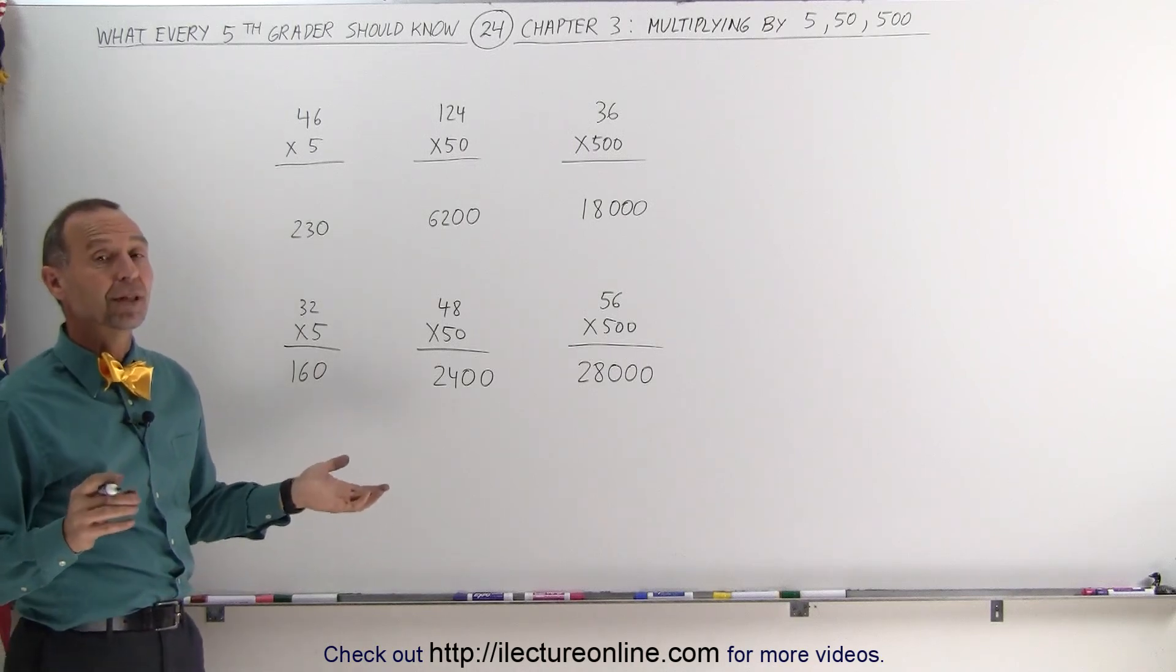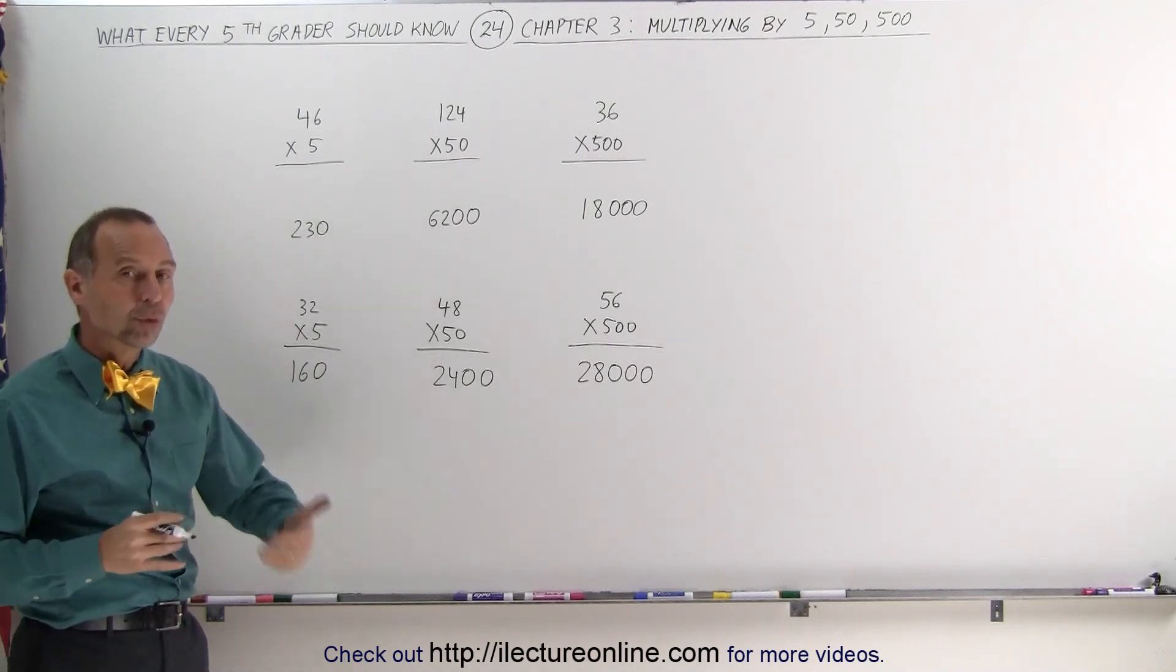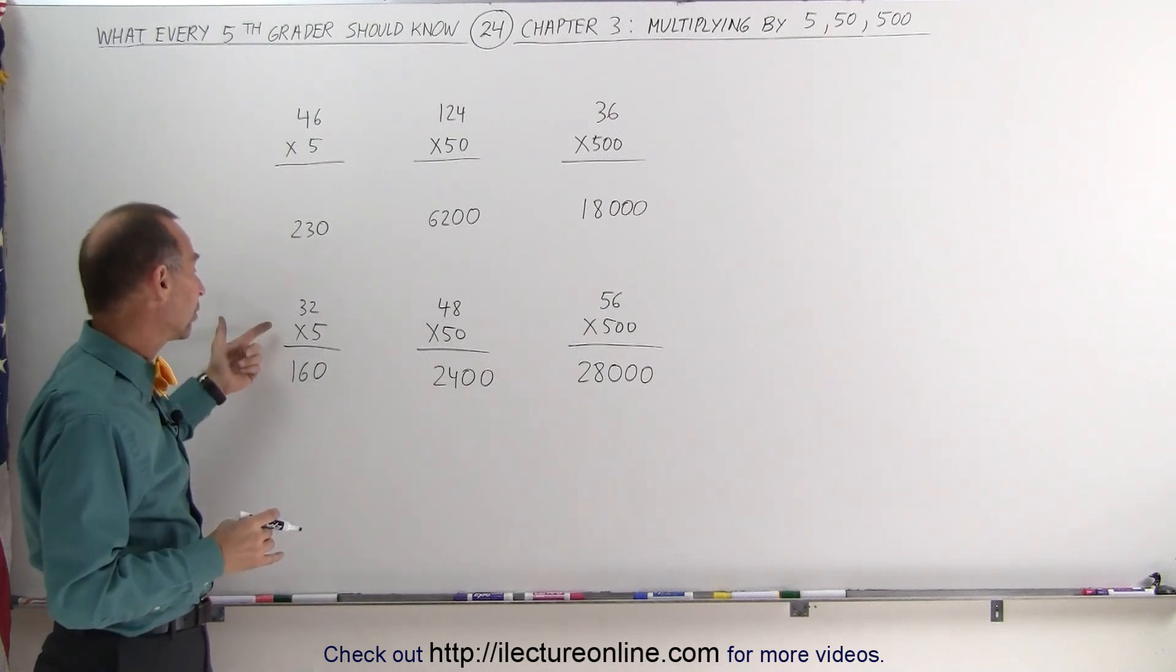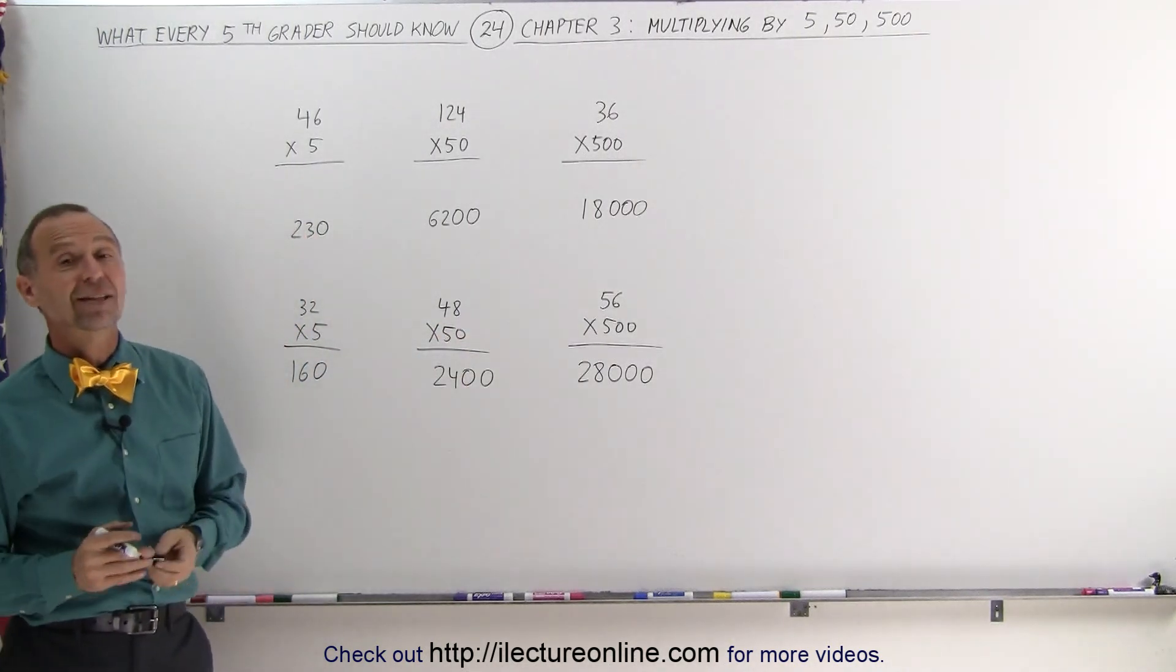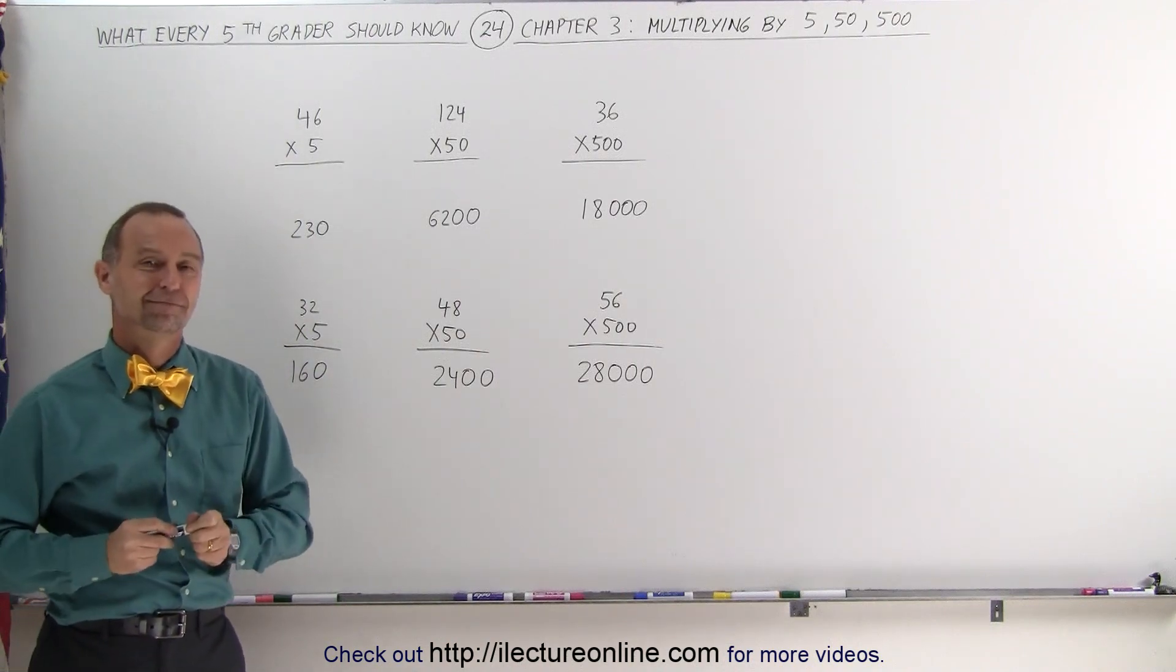And that's how we do it. Divide the number by 2 and add either 1, 2, or 3 zeros, depending on if you're multiplying times 5, times 50, or times 500. Thank you.